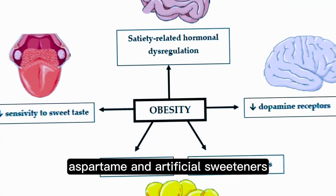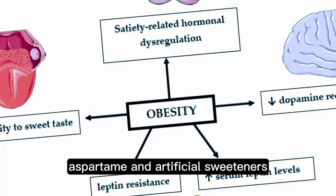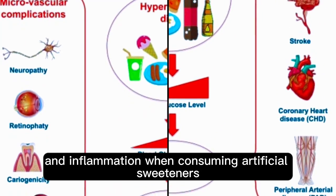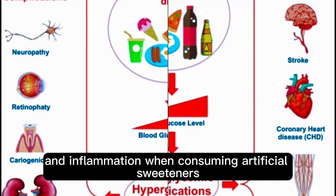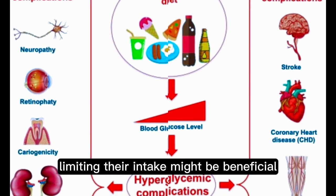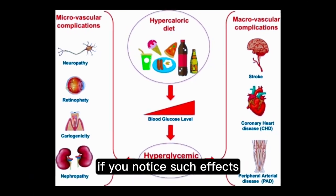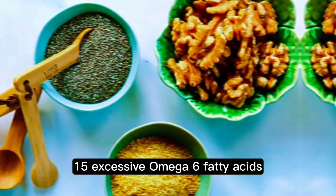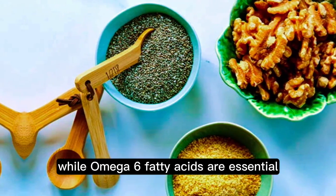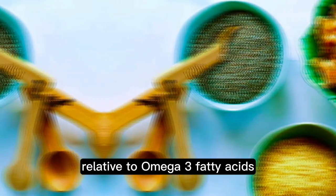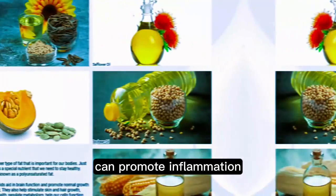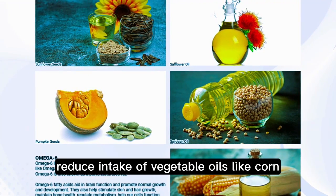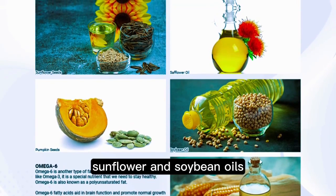14. Aspartame and artificial sweeteners. Some individuals may experience increased joint pain and inflammation when consuming artificial sweeteners. Limiting their intake might be beneficial if you notice such effects. 15. Excessive omega-6 fatty acids. While omega-6 fatty acids are essential, consuming them in excess relative to omega-3 fatty acids can promote inflammation. Reduce intake of vegetable oils like corn, sunflower, and soybean oils.